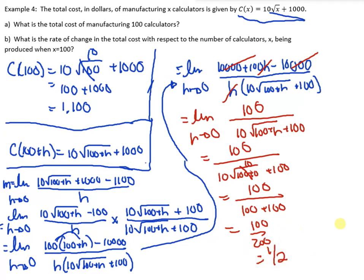So, I get, therefore, the rate of change is 1 half. Since it's a rate, let's actually put 1 dollar for each calculator. Here we go.